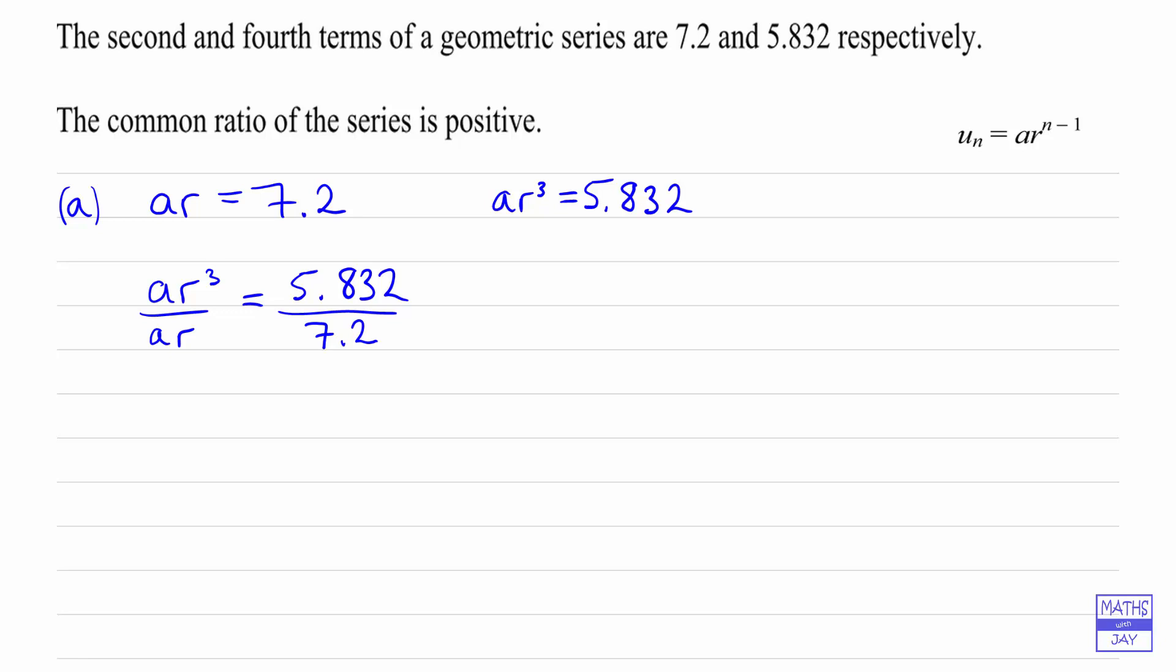Now the reason I nearly said squared was because I was thinking ahead, because I can see that if we divide ar cubed by ar, we end up with r squared. So we've eliminated a. So r squared is going to be, well that comes to 0.81.